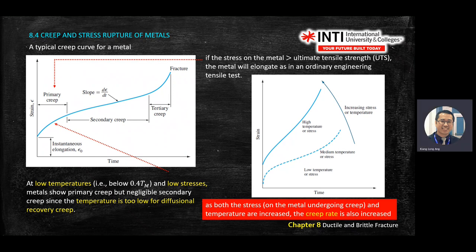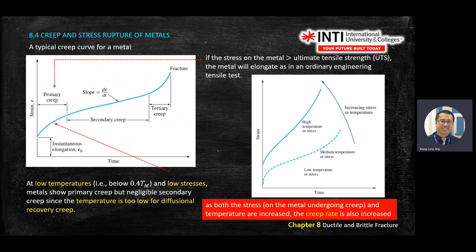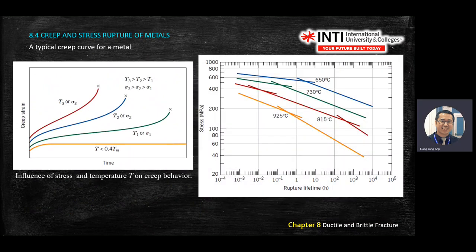On the strain versus time graph, comparing low temperature, medium temperature, and high temperature: below 0.4 Tm the curve is very flat. As temperature increases from T1, T2, T3 and so on, creep increases. At low temperature you have low stress and a longer fracture lifetime.